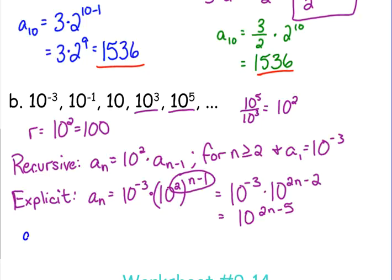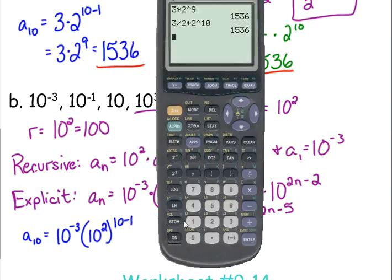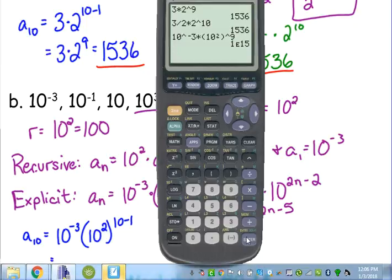So again, just for illustration purposes, I want to show you that both of these should give us the same answer. So I'm going to put it into the first version here. n is 10. Find my 10th term. So that is 10 to the negative 3rd times, we do need to put it in parentheses, 10 squared raised to the 9th. And that gives us 1 times 10 to the 15th. Remember the E there. The capital E is scientific notation.